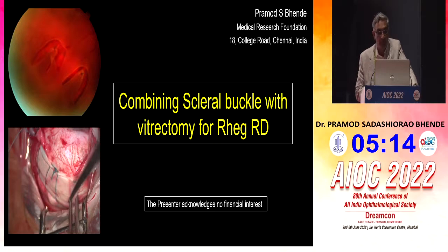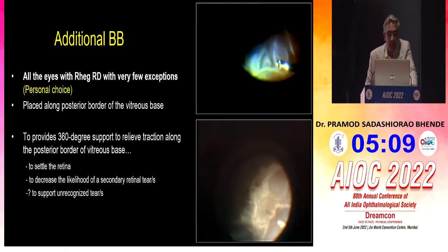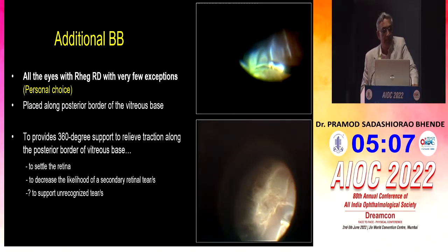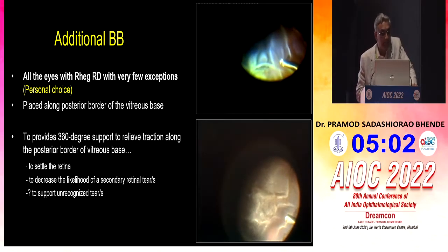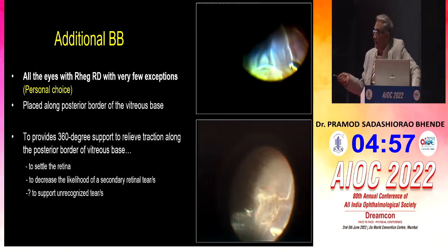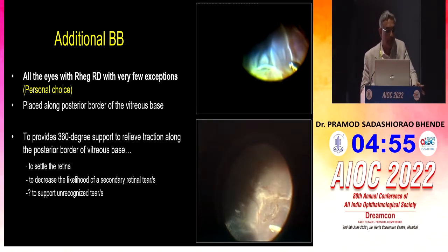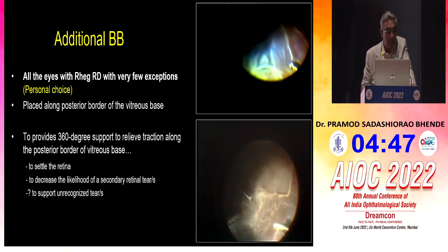Here comes the combined scleral buckling and vitrectomy for rhegmatogenous detachment. An additional belt buckle is my personal choice. In most cases of rhegmatogenous detachment, I still prefer to support with at least an encircling band, and it is placed along the posterior border of the vitreous base — that is very important. It provides 360-degree support to relieve traction along the posterior border, helps to settle the retina, decreases the likelihood of secondary retinal breaks, and also supports unrecognized breaks as well.